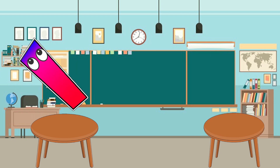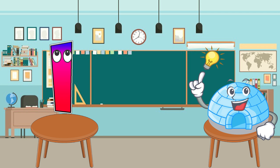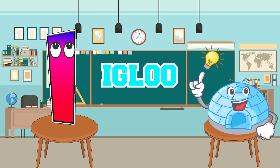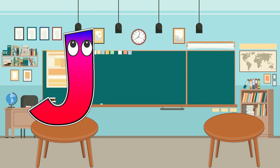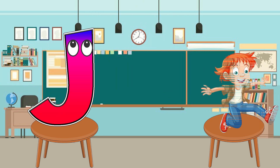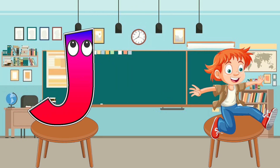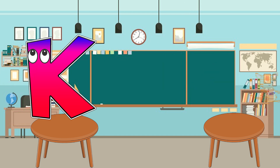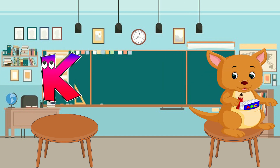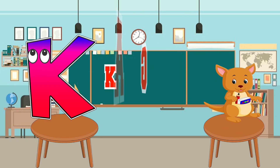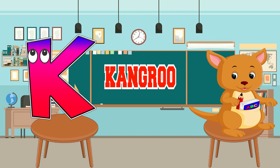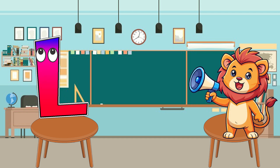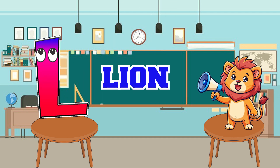I is for igloo, i-i-igloo. J is for jump, j-j-jump. K is for kangaroo, k-k-kangaroo. L is for lion, l-l-lion.